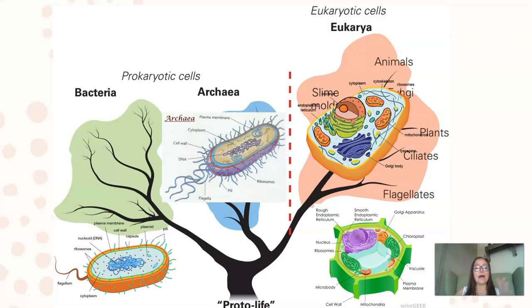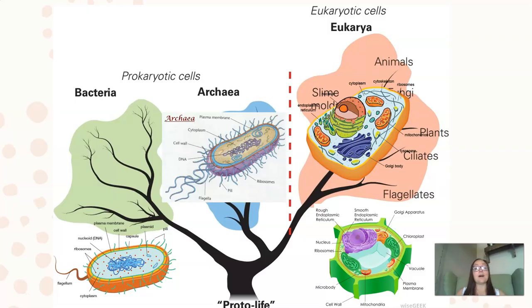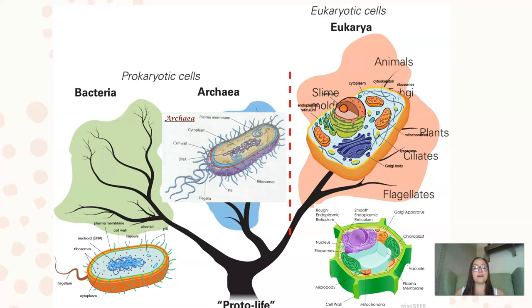Prokaryotic cells are cells that lack a nucleus and membrane-bound organelles. Prokaryotes can be divided into two categories: bacteria and archaea. Archaeans are single-celled organisms that live in extreme environments, like hot springs in Yellowstone National Park, where they were first discovered. Evolutionarily, archaeans are actually more closely related to eukaryotic cells than bacteria are.